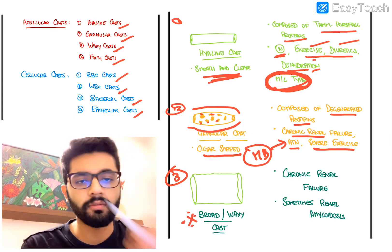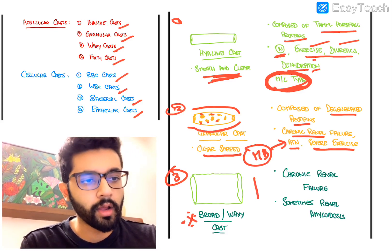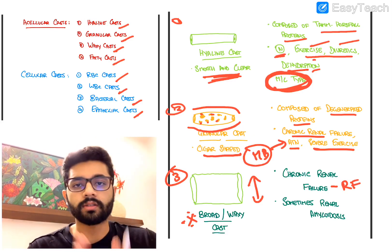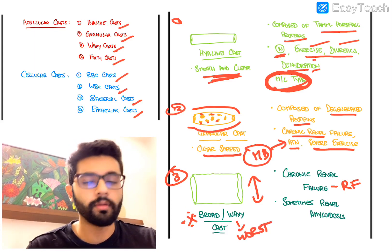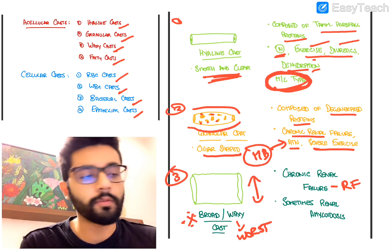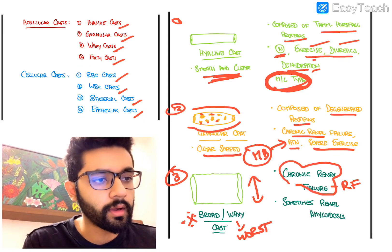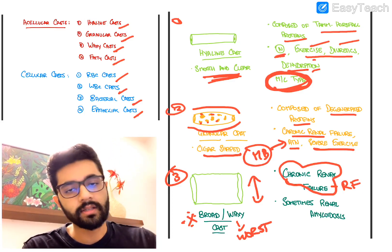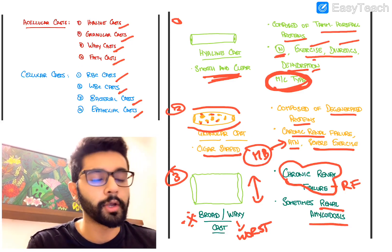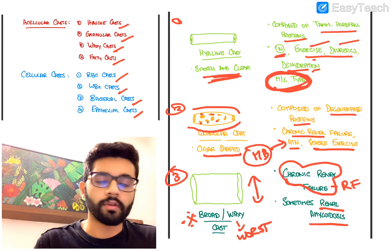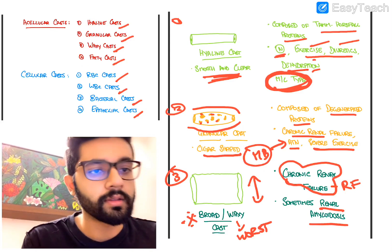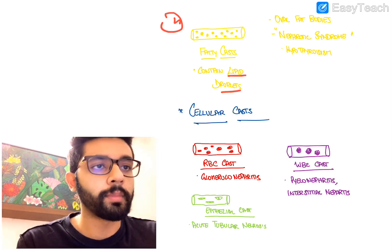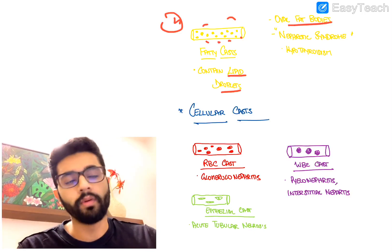The most important and most frequently asked cast in exams is the broad cast or waxy cast. Broad casts are similar to hyaline casts but much broader and more visible, and they indicate renal failure - they carry the worst prognosis. Broad casts are seen in chronic renal failure only when the situation is very bad. Waxy casts can be slightly narrower and are also seen in renal amyloidosis.